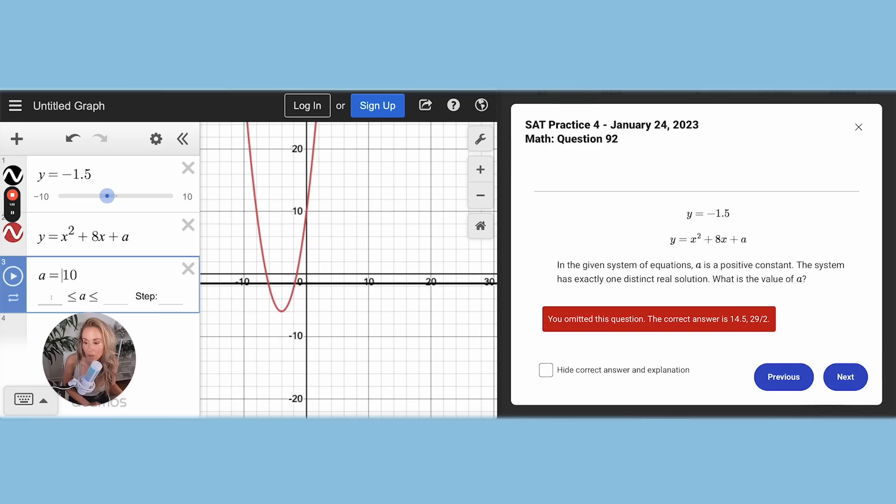What I have to do is I have to change the range of A, because right now it's going from negative 10 to 10. So let me just make it from like negative 5 to 50. And what I'm going to do too, is I'm going to add in a step of 0.1, because I want to be able to move it incrementally, just in case there's like a decimal or whatever.